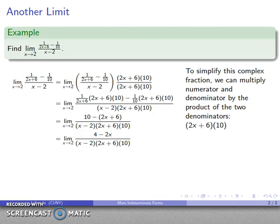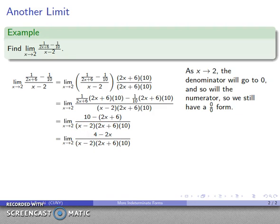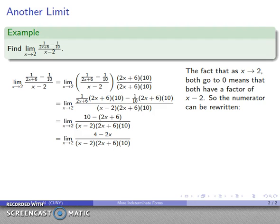Now we've done all this algebra, so let's see if we've gotten any place. As x gets close to 2, the denominator, well, because it has a factor of x minus 2, it's going to go to 0. The numerator, as x gets close to 2, 4 minus 2x gets close to 0. And both numerator and denominator both go to 0, and so we still have a 0 over 0 form. We've done a lot of work, and it seems like we've gotten nowhere, except the fact that x equals 2 makes both of the numerator and denominator equal to 0. It says they both have a factor of x minus 2.